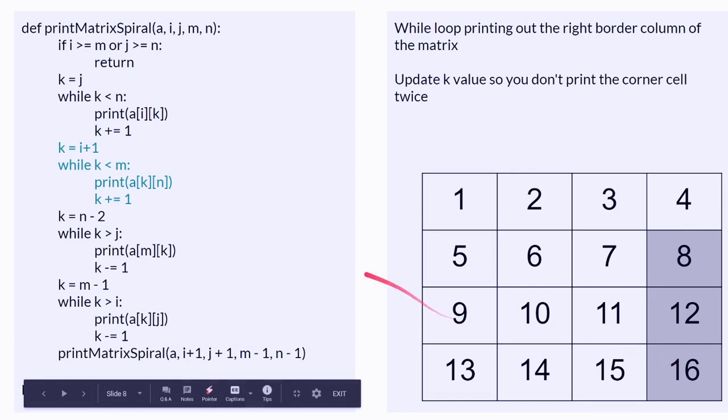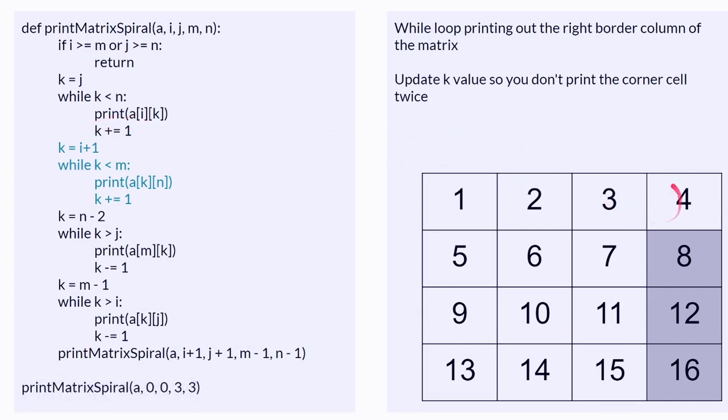Then you see here, where you update K, you make it one bigger so that it doesn't hit this corner.